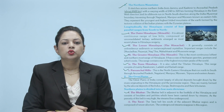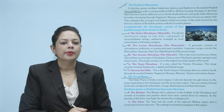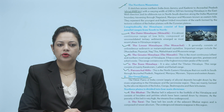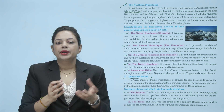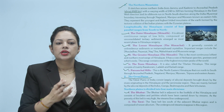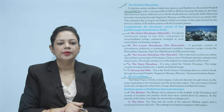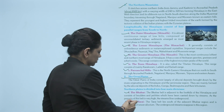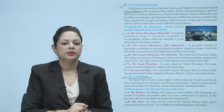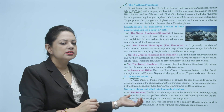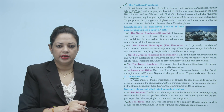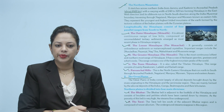The Bhabar belt is adjacent to the foothills of the Himalayas and consists of boulders and pebbles which have been carried down by streams. As the porosity of this belt is very high, the streams flow underground. Bhabar jo range hai great plains ki, yahaan aapko bade bade patthar aur pebbles milenge — unke deposit se yeh division bani hai. Next is the Tarai range. The Tarai belt lies south of the adjacent Bhabar region and is composed of newer alluvium. The underground streams reappear in this region.